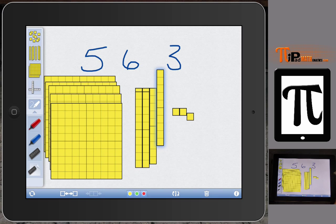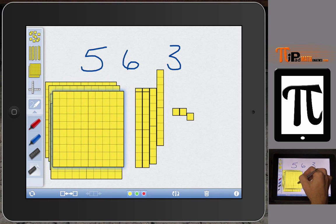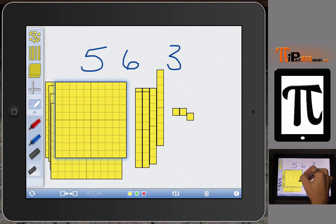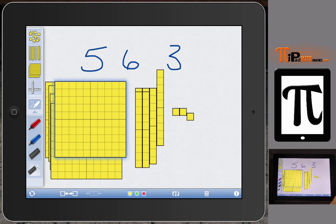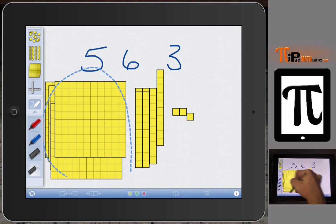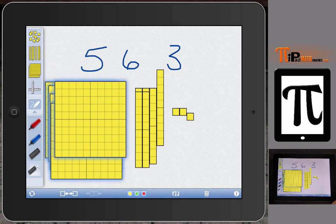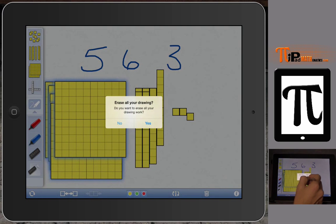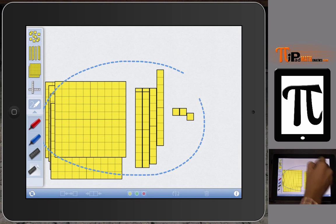These are longs, each long equals ten. So when you have six longs that equals sixty. And then the five hundreds, these are your flats, and each one equals one hundred. So when you have five of them all together that total is five hundred.